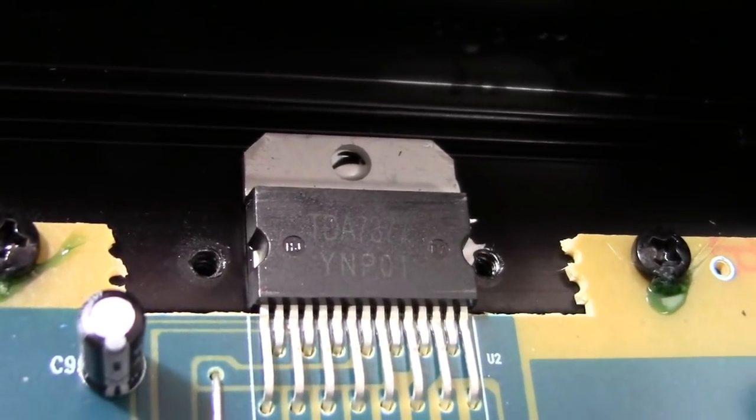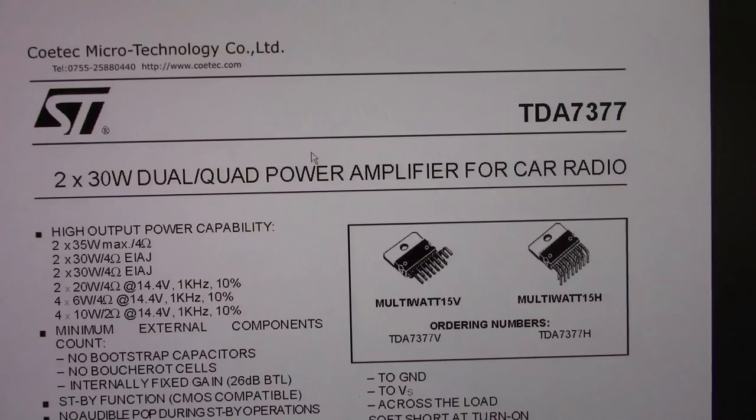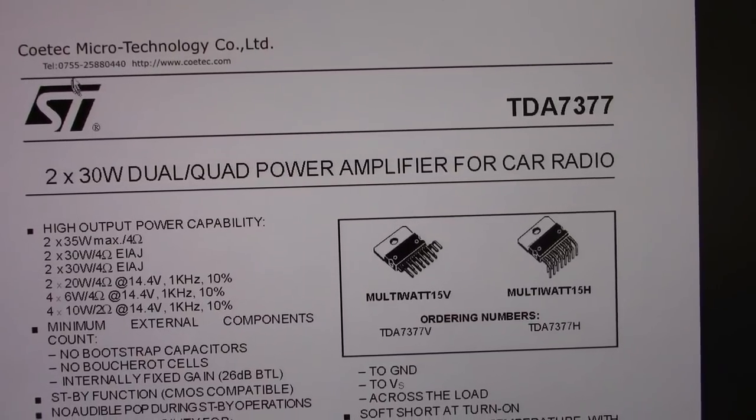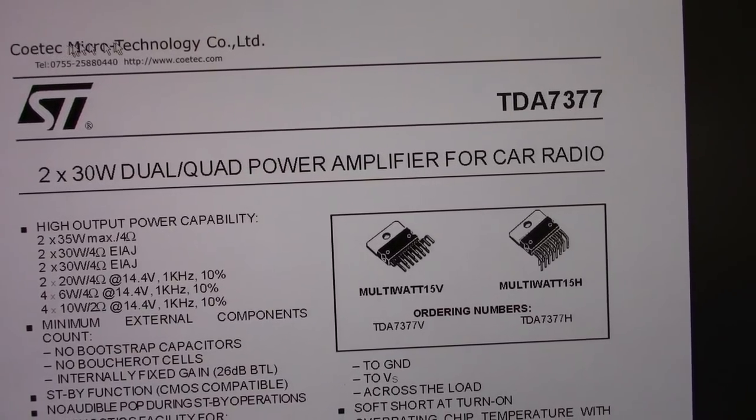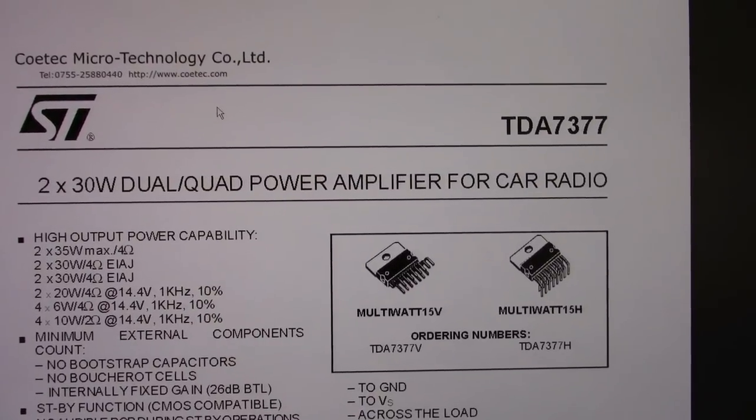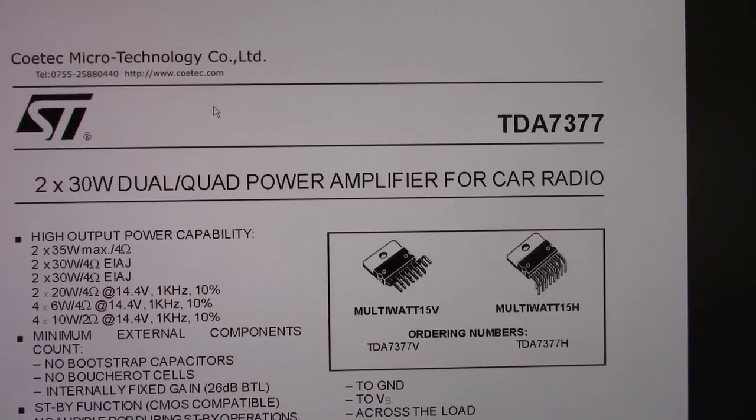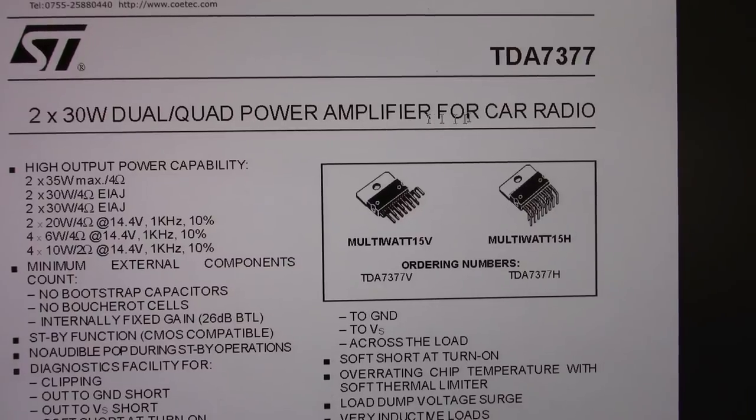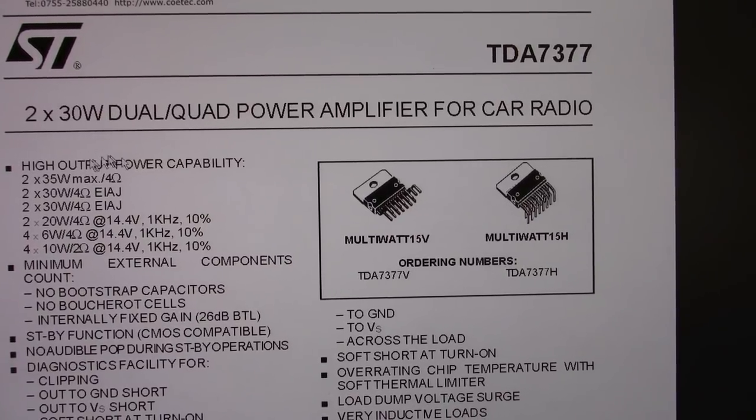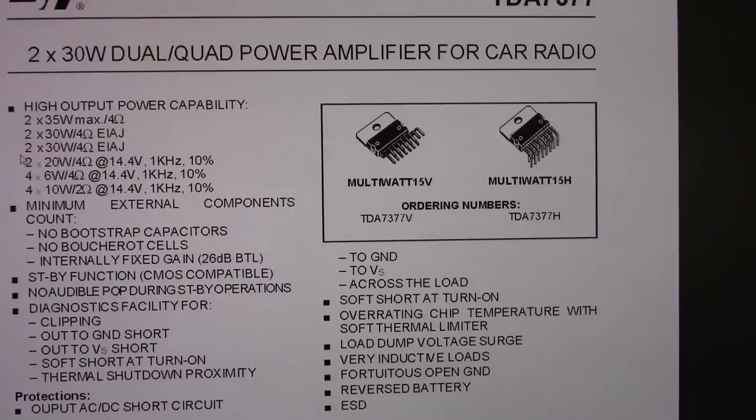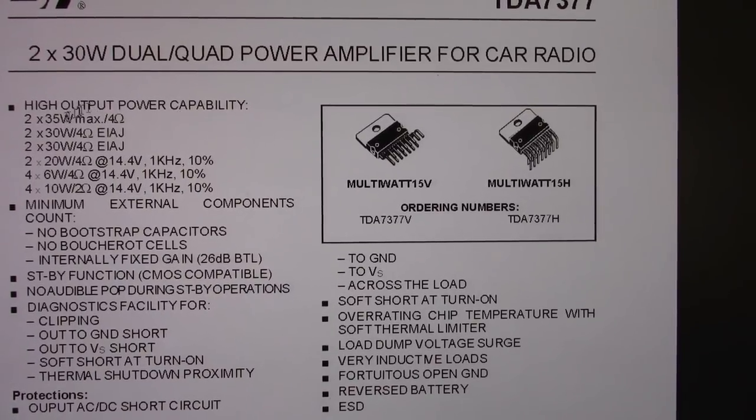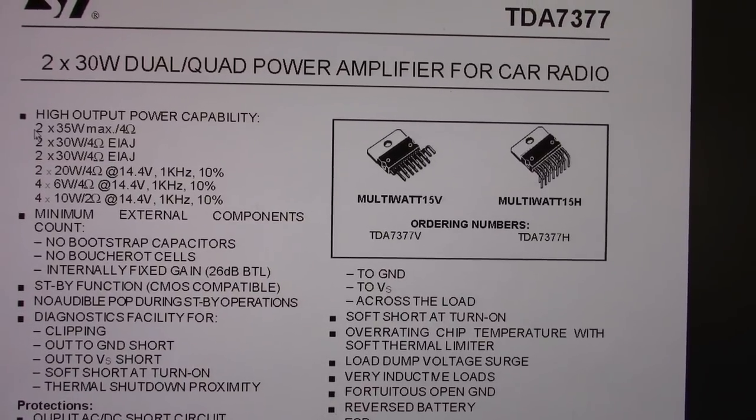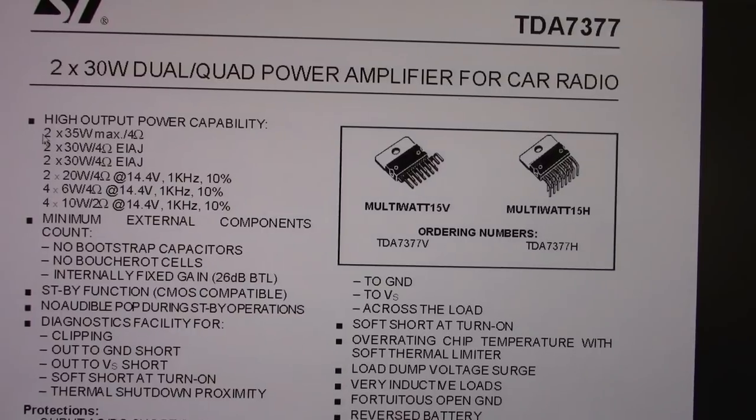But anyway, I'm going to go find a datasheet. I found the datasheet, STMicroelectronics, Kotech Microtechnology, who are they? 2x30 watt dual quad power amplifier for car radio. That's essentially what it is, is a car radio amplifier chip. Sorry about the background squeaks, we've got a hungry kitty. It's not time for feeding, but he's going to cry anyway.